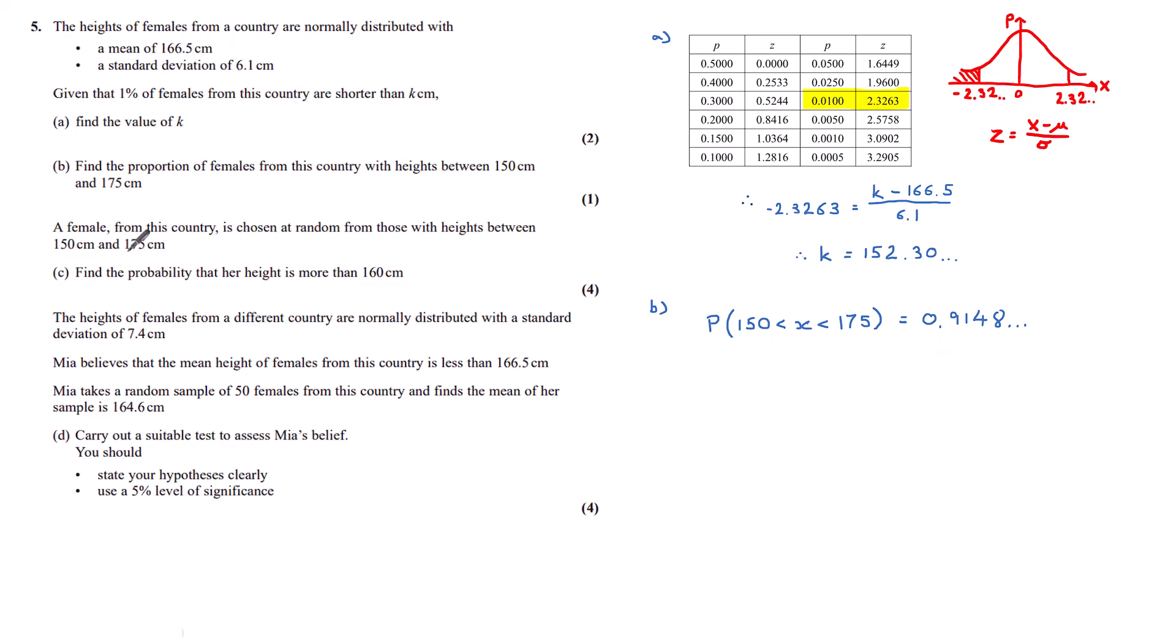A female from this country is chosen at random from those with heights between 150 and 175. For part C, I want to find the probability that her height is more than 160. What we have is the probability of her height being more than 160, given that we already know her to be between 150 and 175 centimetres. And so we have our given that formula.